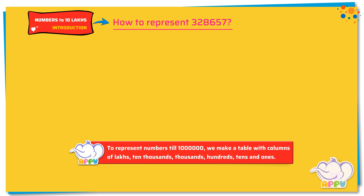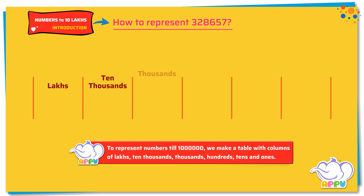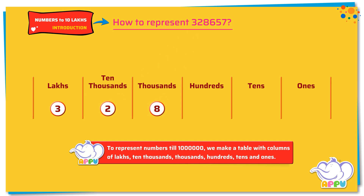To represent a six-digit number, we make a table of lakhs, 10 thousands, thousands, hundreds, tens, and ones. So, three-two-eight-six-five-seven can be represented as three lakhs, two ten-thousands, eight thousands, six hundreds, five tens, and seven ones.